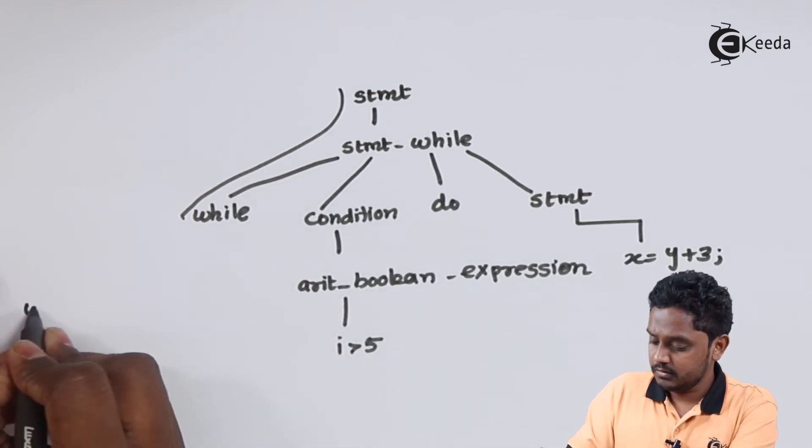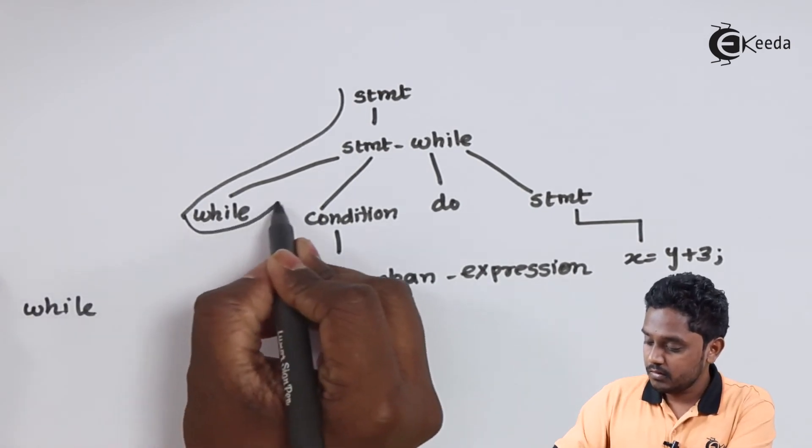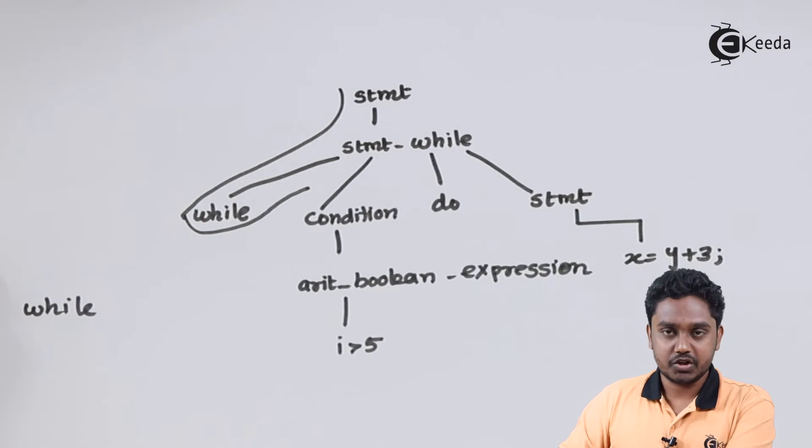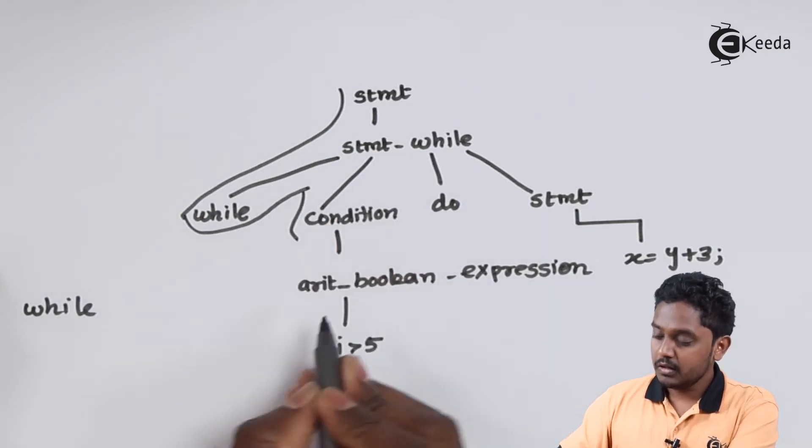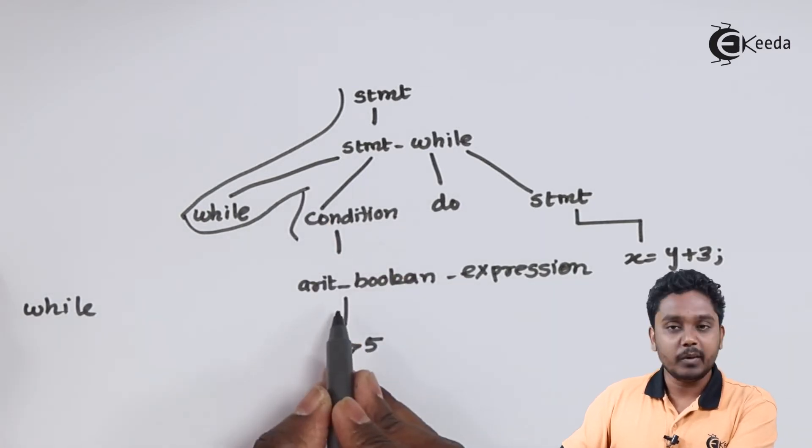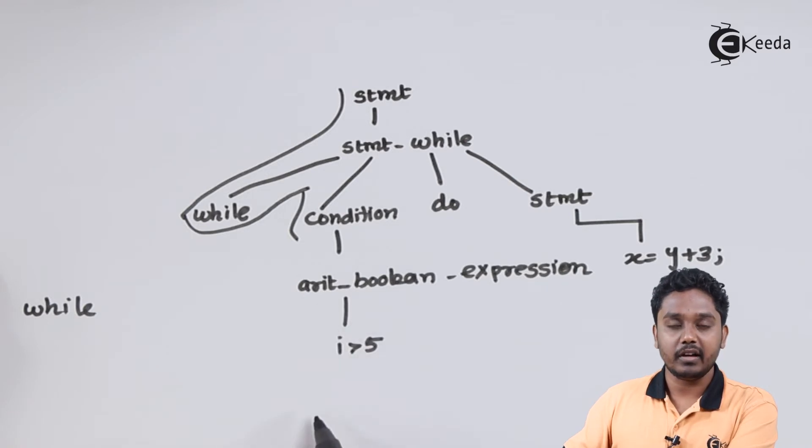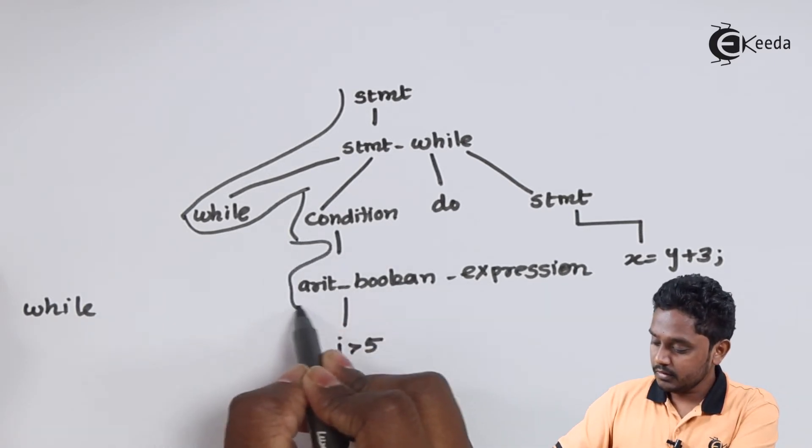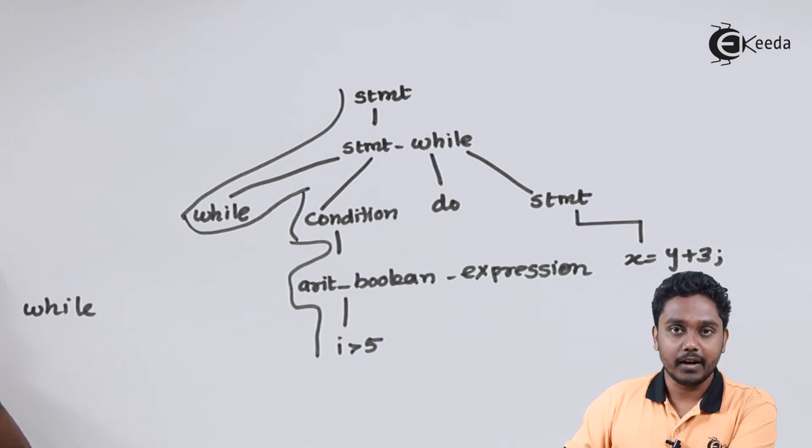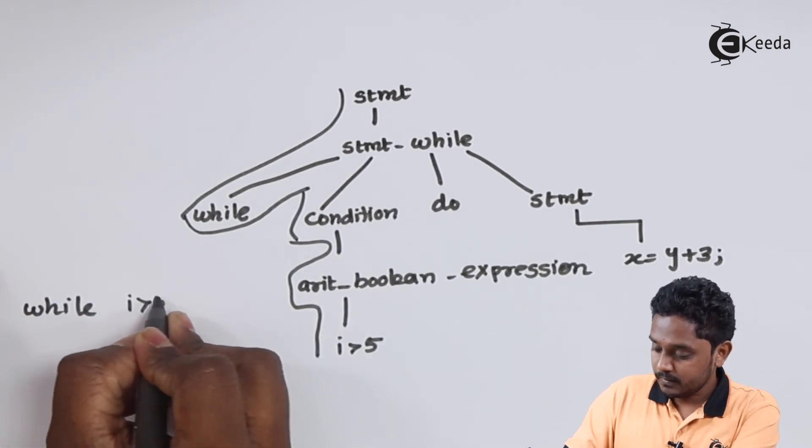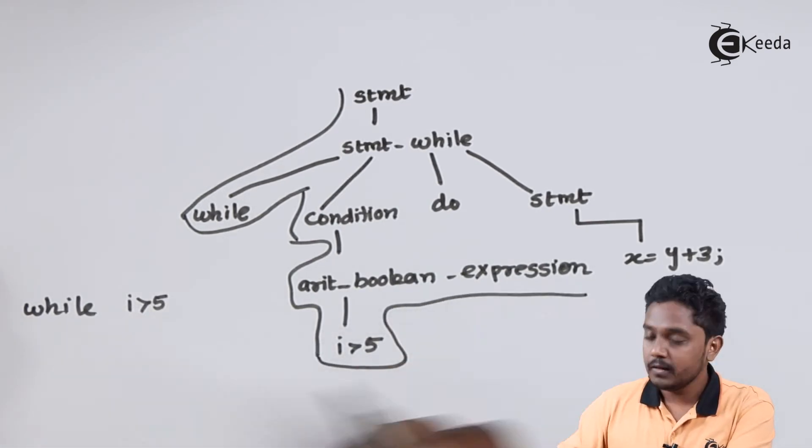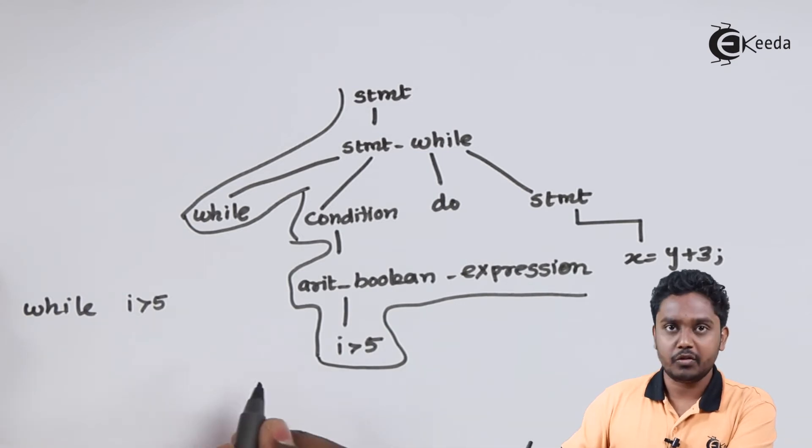It is a while which is going to a condition. This condition is an arithmetic Boolean condition, over here we are using arithmetic not Boolean, which is i greater than 5. This expression is returning to the start symbol.